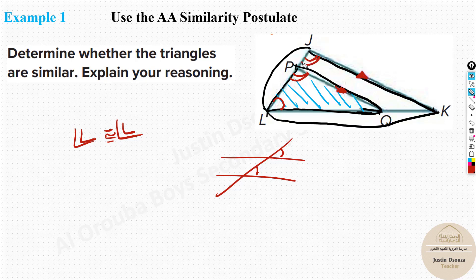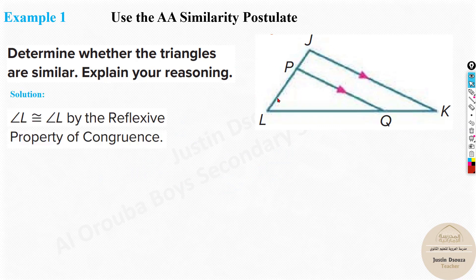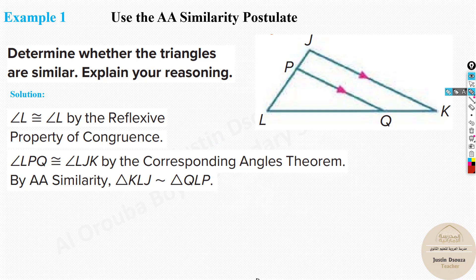Because PQ is parallel to JK, corresponding angles are equal, so angle LPQ is congruent to angle LJK. That gives us two pairs of congruent angles. The first is the reflexive property (angle L is shared), and the second is the corresponding angles theorem. With these two statements, we can confirm the triangles are similar. Remember: the similar sign looks like a tilde (~), while the congruent sign is like an equals sign with a tilde on top (≅).